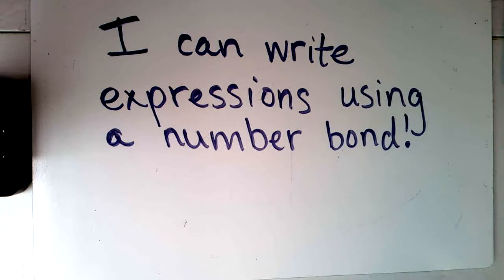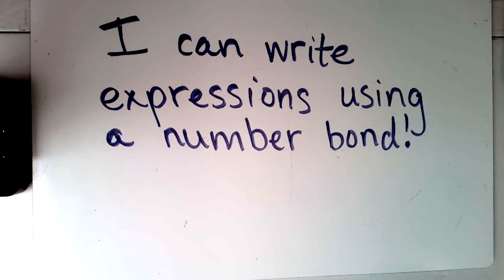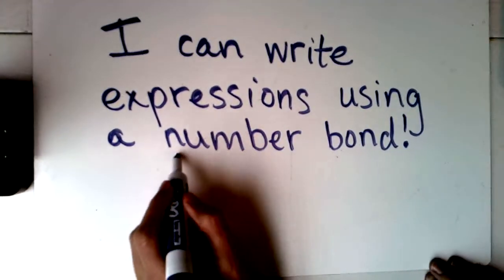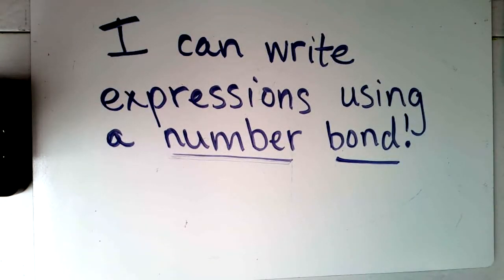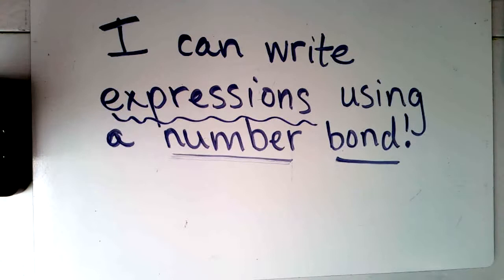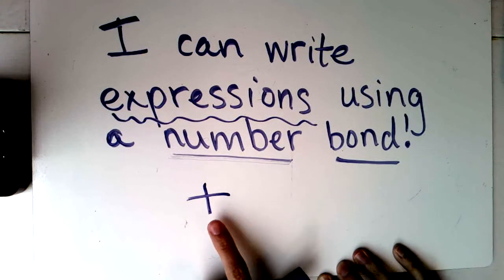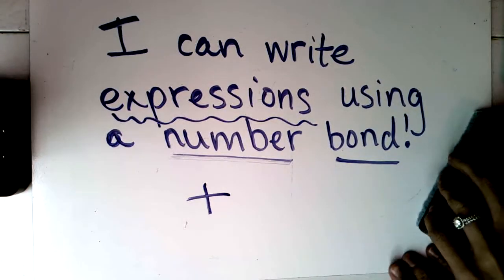To start today, we will be saying our I can statement, and then we will get started with our story problem and our lesson. Today's I can statement is: I can write expressions using a number bond. We have been working with number bonds the past couple of days, and I'm hoping you're starting to get comfortable with using them. A new word today is expressions — that is a big word. An expression looks kind of like a number sentence. We're going to be using some adding signs today. An adding sign looks like this — it's that plus sign that we use. That's in an expression.